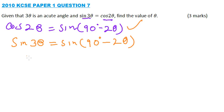now we get the inverse of sine. So we end up with 3 theta equals 90 minus 2 theta. We bring 2 theta to the left side.